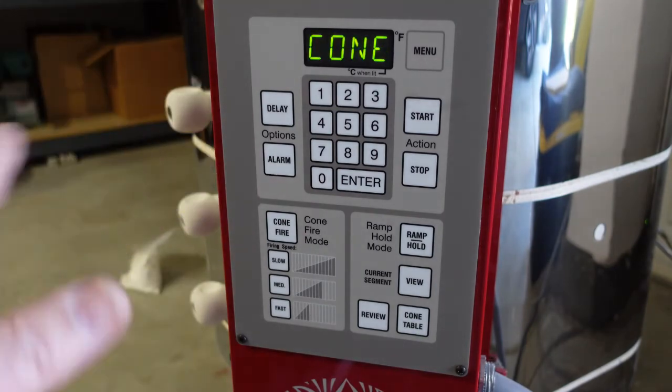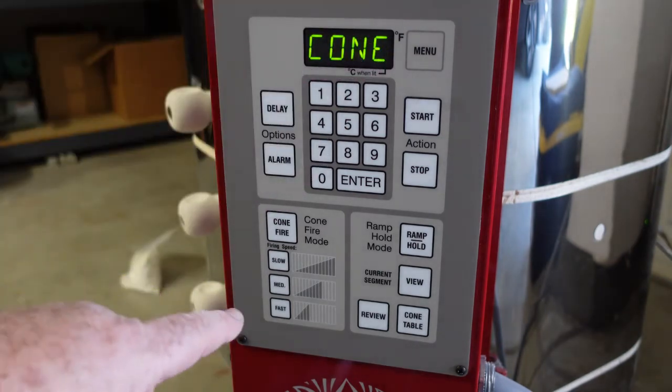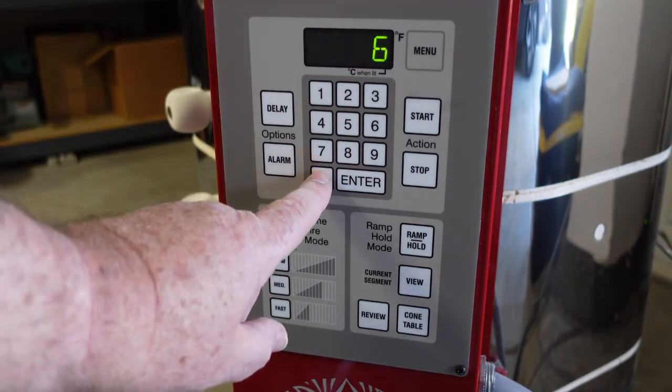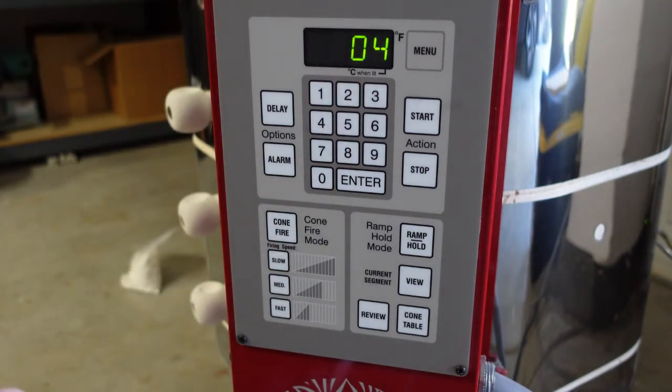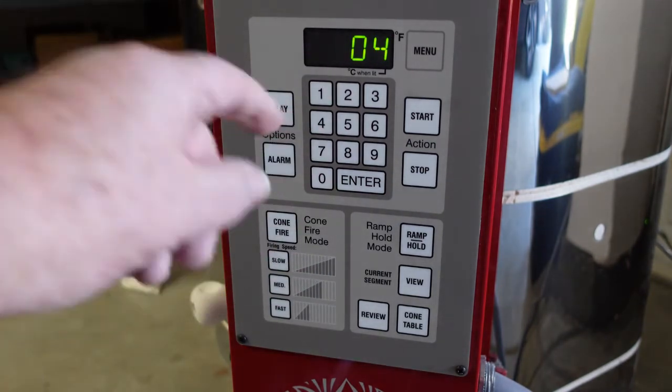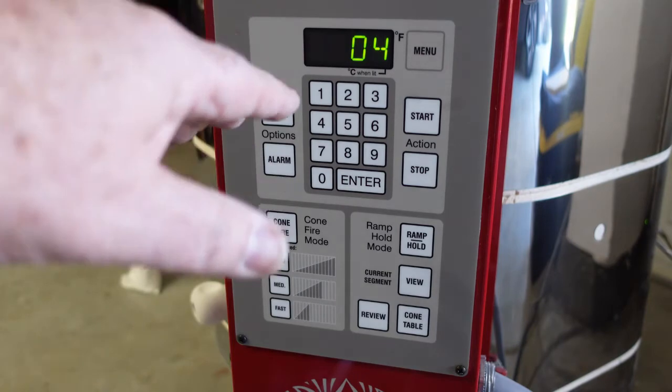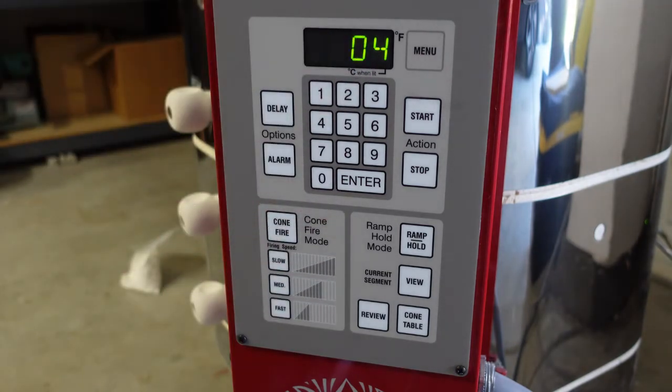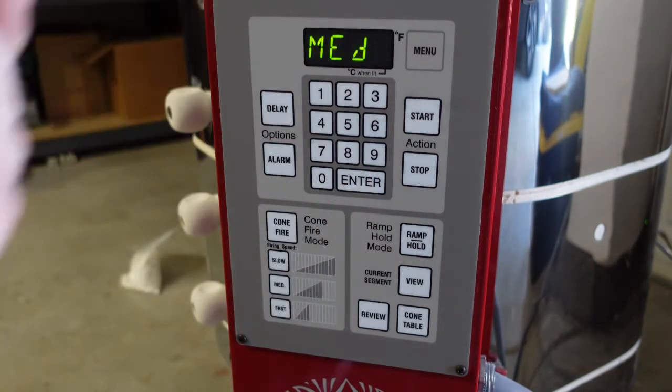It says what cone do you want. You see, last time I did it, I went to cone six. I want to do cone zero-four. Now this is the one place people could mess up. If I just did four, four is a much higher temperature than zero-four. So keep your mind about you when you're doing this. You just say zero-four and then you say enter.